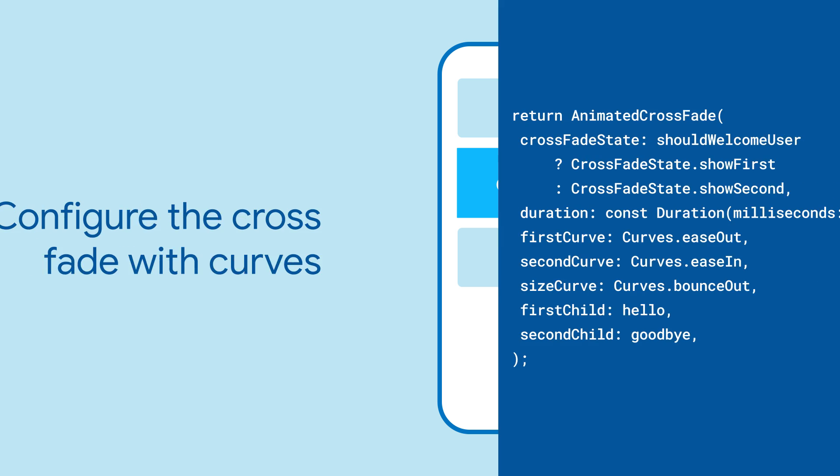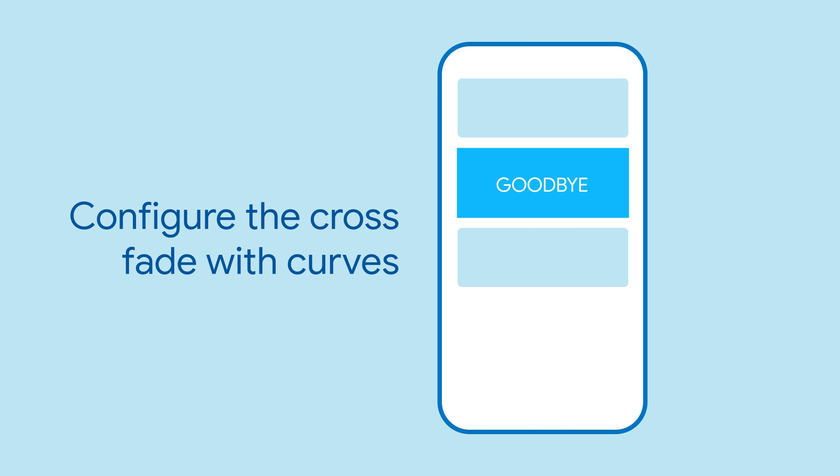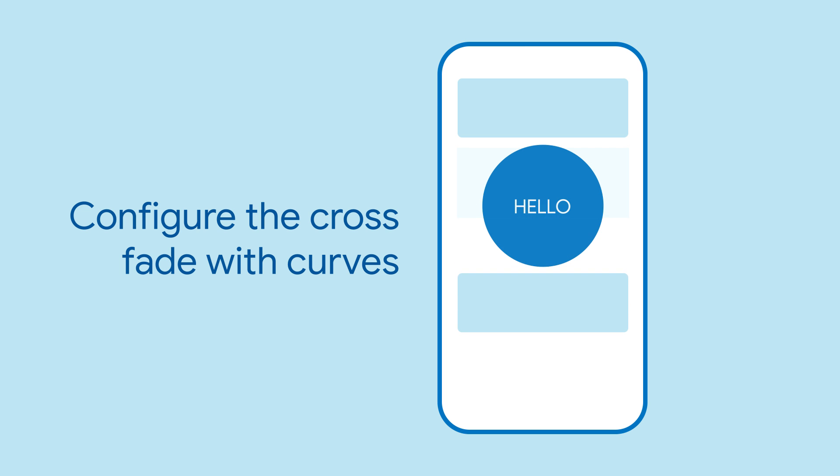The exact solution will depend on what you want to achieve. The crossfade is highly configurable — you can give it different curves and durations for both directions, and even a different curve for the size than for the fade. Now your crossfade is exactly the way you want it.